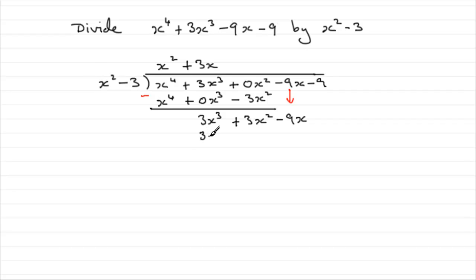3x times the x squared is going to be plus 3x cubed. So, that makes that term exactly the same. That's what we were trying to achieve. And then, plus 3x times the minus 3 is going to be minus 9x. So, we put that on the end here.